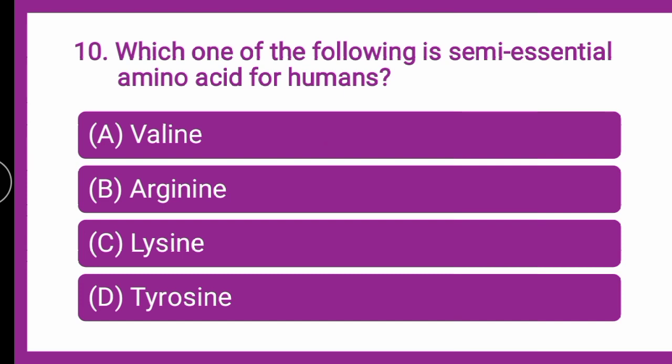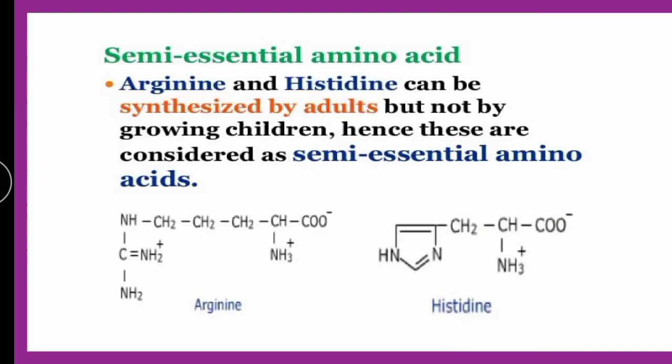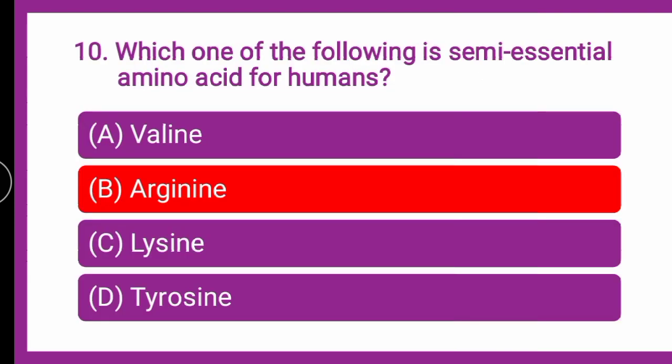Next question: which one of the following is a semi-essential amino acid for humans — valine, arginine, lysine, or tyrosine? The two semi-essential amino acids are arginine and histidine. They are called semi-essential because they can be synthesized by adults but not by growing children. Essential amino acids cannot be synthesized by the body, but semi-essential ones are synthesized by adults — just not by growing children. So the correct answer is arginine.